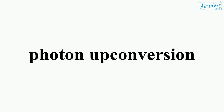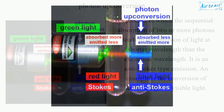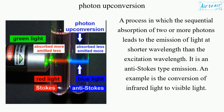Photon-up-conversion is a process in which the sequential absorption of two or more photons leads to the emission of light at a shorter wavelength than the excitation wavelength. It is an anti-Stokes-type emission. An example is the conversion of infrared light to visible light.